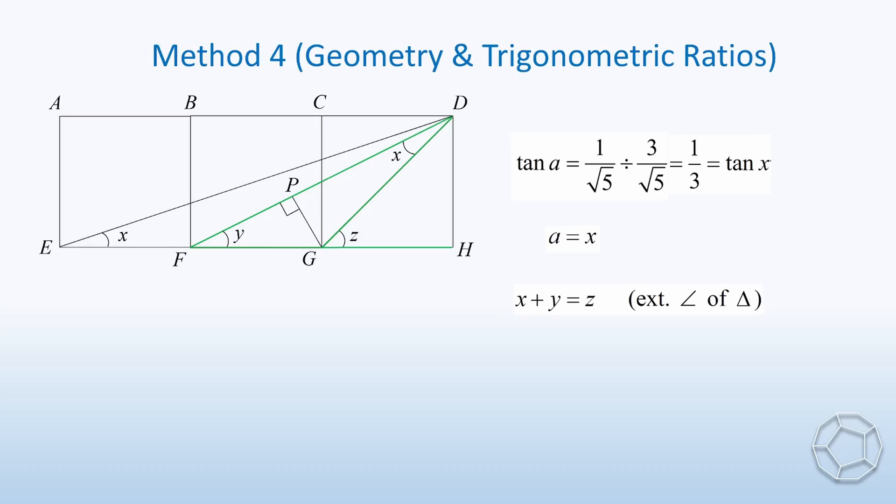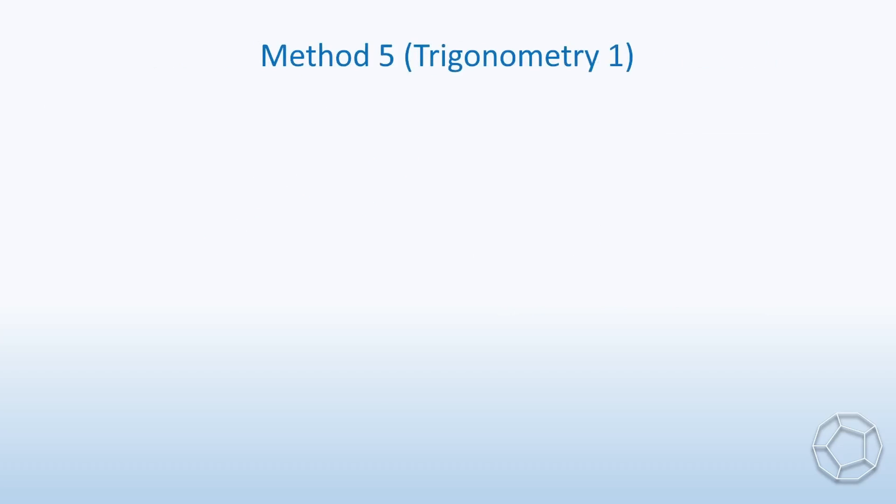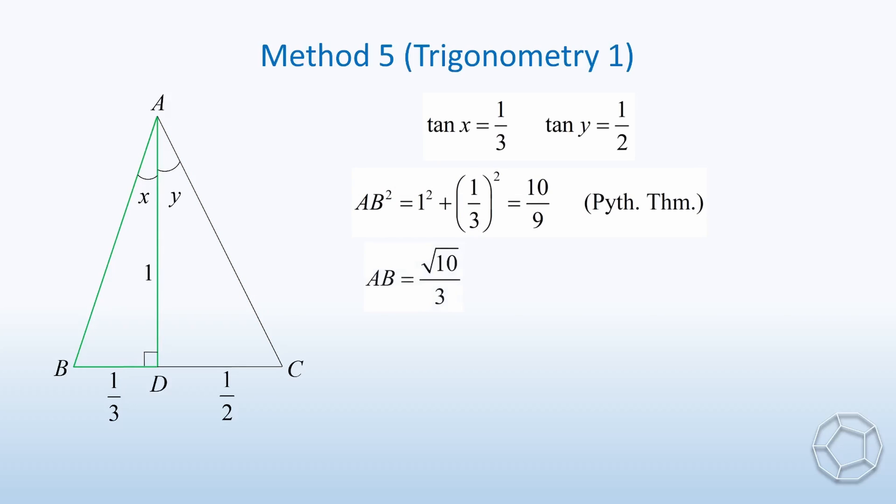So far, we have a whole bunch of methods using geometry. What about other branches of mathematics? It's time for trigonometry. In method 5, we extract the two angles x and y like this. Let the length of the common side AD be 1. Using the values of tangent x and tangent y, the green side BD is equal to 1 over 3, and the red side CD is equal to 1 over 2. Now, we can work out these two hypotenuses easily. For the green triangle on the left, we apply Pythagoras theorem. So AB is equal to square root 10 over 3. Likewise, for the red triangle on the right, by Pythagoras theorem again, we have AC is equal to square root 5 over 2.